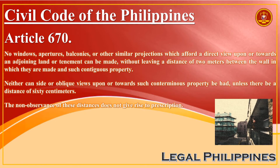Neither can side or oblique views upon or towards such conterminous property be had, unless there be a distance of 60 centimetres. The non-observance of these distances does not give rise to prescription.